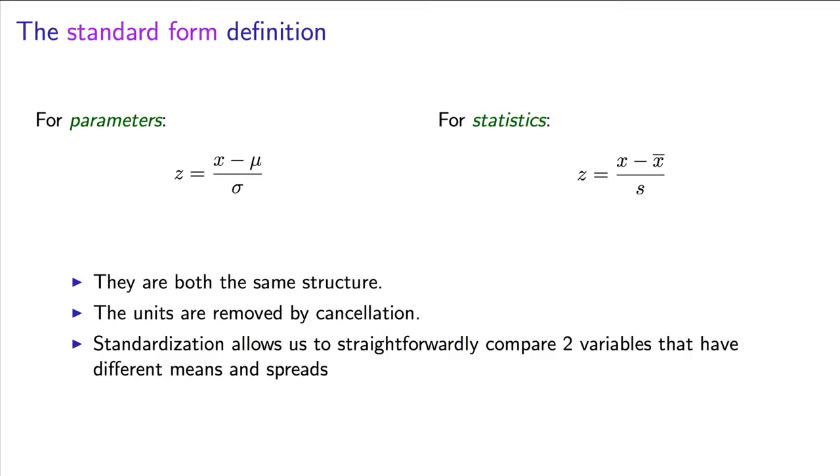Now, once you've done this centering and scaling, your recalculated data, called z now, has a mean of 0 and standard deviation of 1. We call this a standardized data vector.